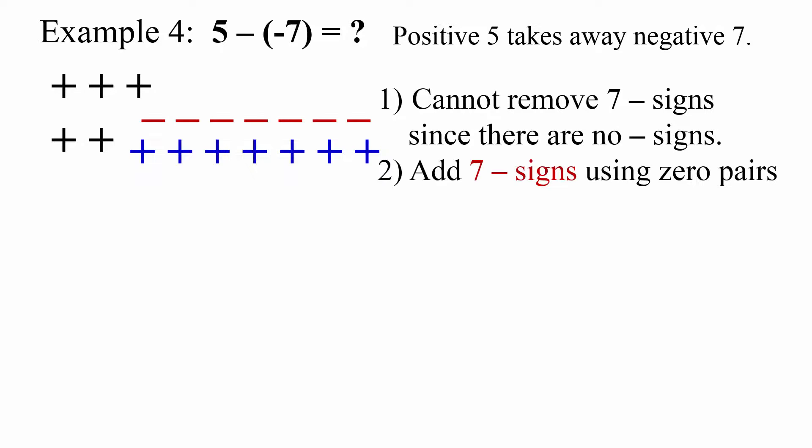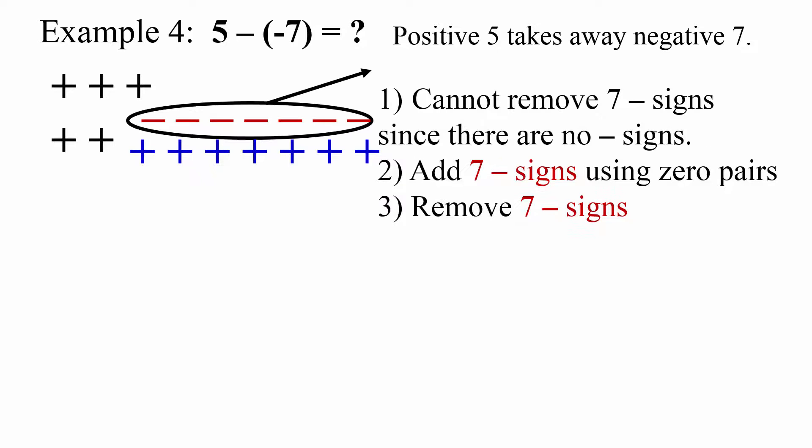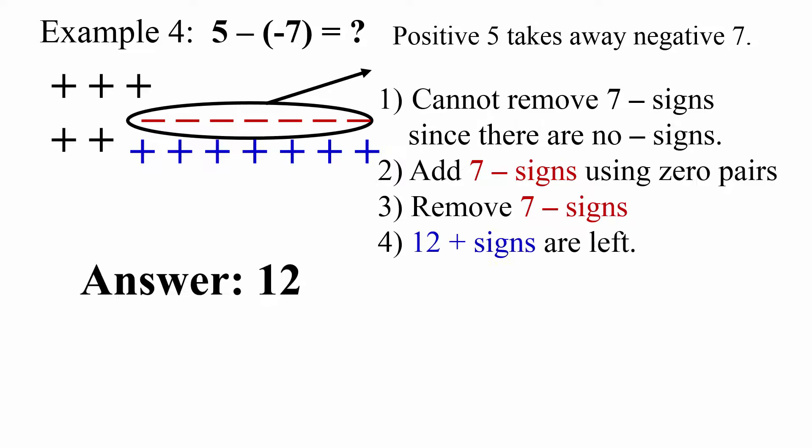I add in 7 negative signs using zero pairs. Then I remove 7 negative. That leaves me with 12 positive signs, and that is my answer.